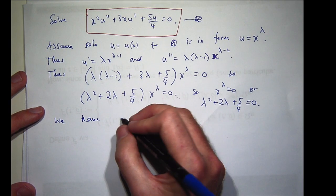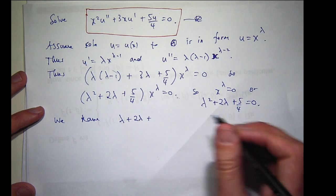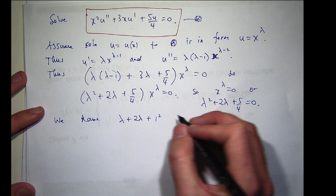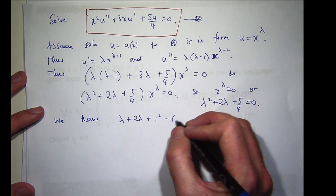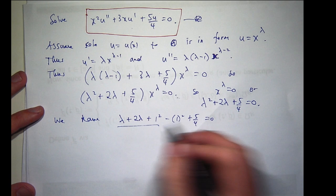You take half the coefficient of λ, square it, add it, and take it away from the left-hand side. So this is the perfect square now.